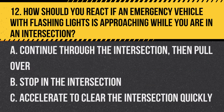Question 12. How should you react if an emergency vehicle with flashing lights is approaching while you are in an intersection? A. Continue through the intersection, then pull over. B. Stop in the intersection. C. Accelerate to clear the intersection quickly. Answer: A. Continue through the intersection, then pull over. It's safest to clear the intersection first, and then safely pull over to the side of the road.